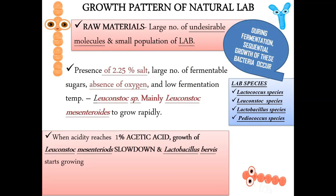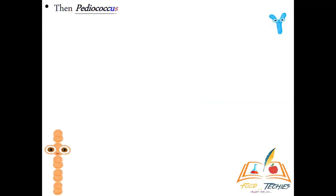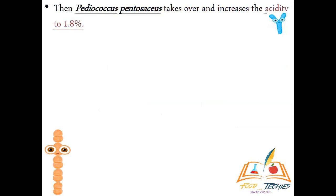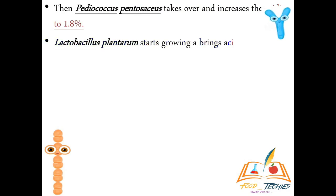Salt is used at 2 to 2.25 percent of the weight of the raw material, as this is the most desirable concentration. This allows the growth of Leuconostoc species, mainly Leuconostoc mesenteroides, which grows rapidly until the acidity reaches 1 percent. After that, Lactobacillus brevis starts growing rapidly until the acidity reaches 1.5 percent. Then Pediococcus pentosaceus takes over and brings acidity to 1.8 percent, followed by Lactobacillus plantarum which brings it to 2 percent.